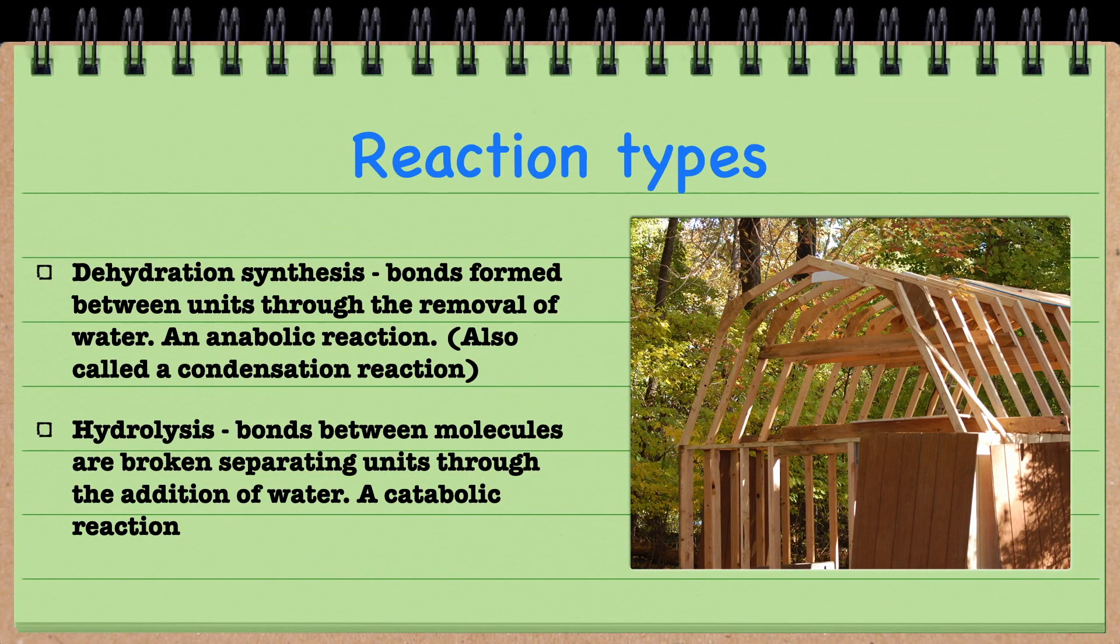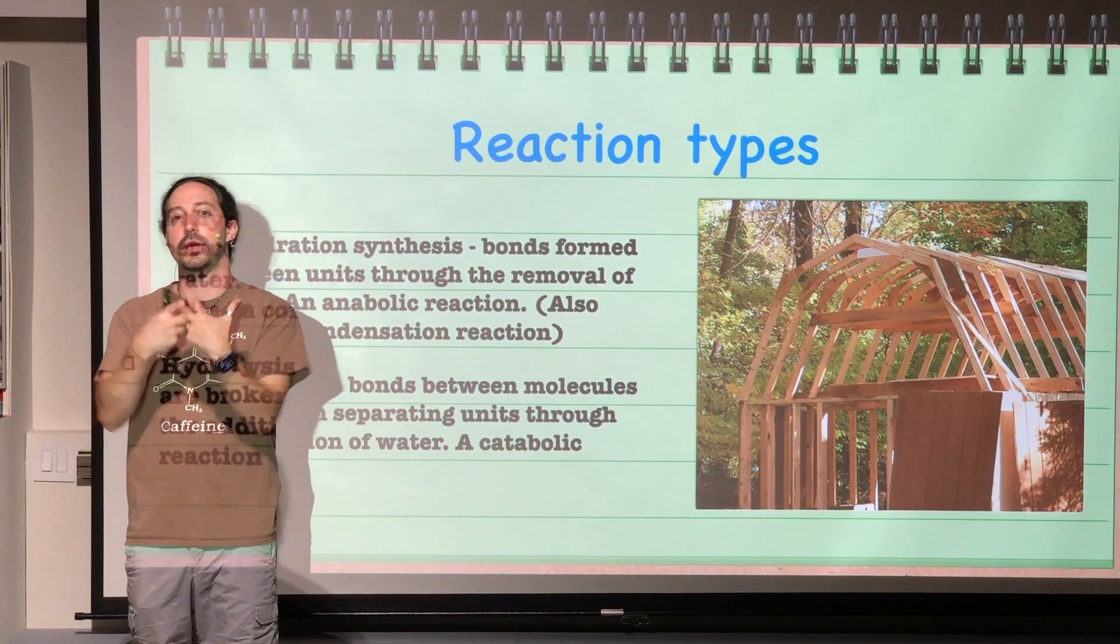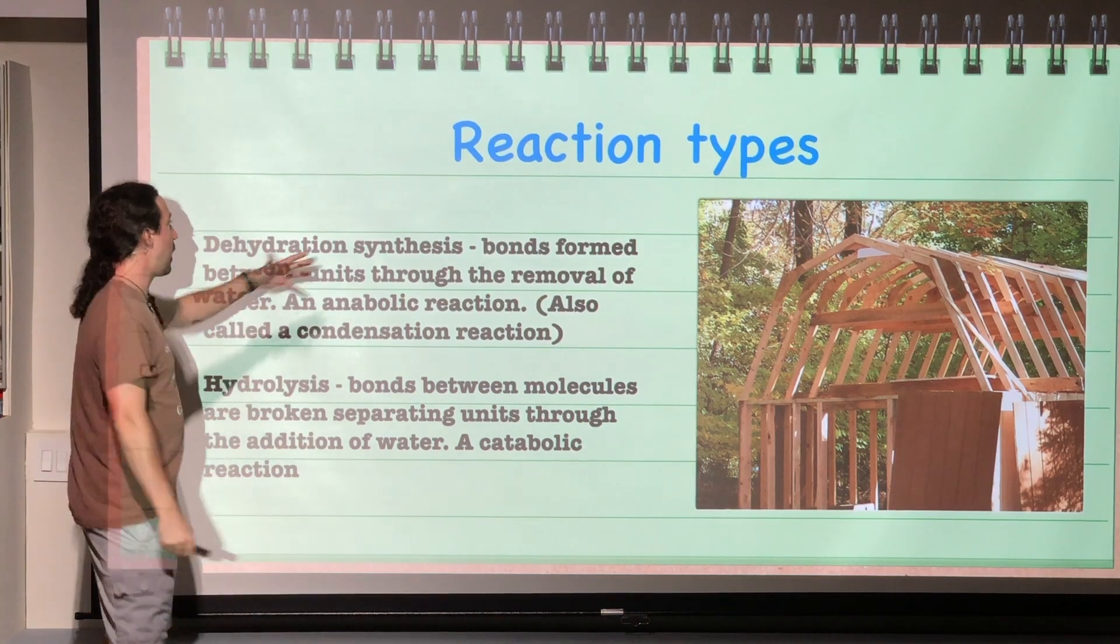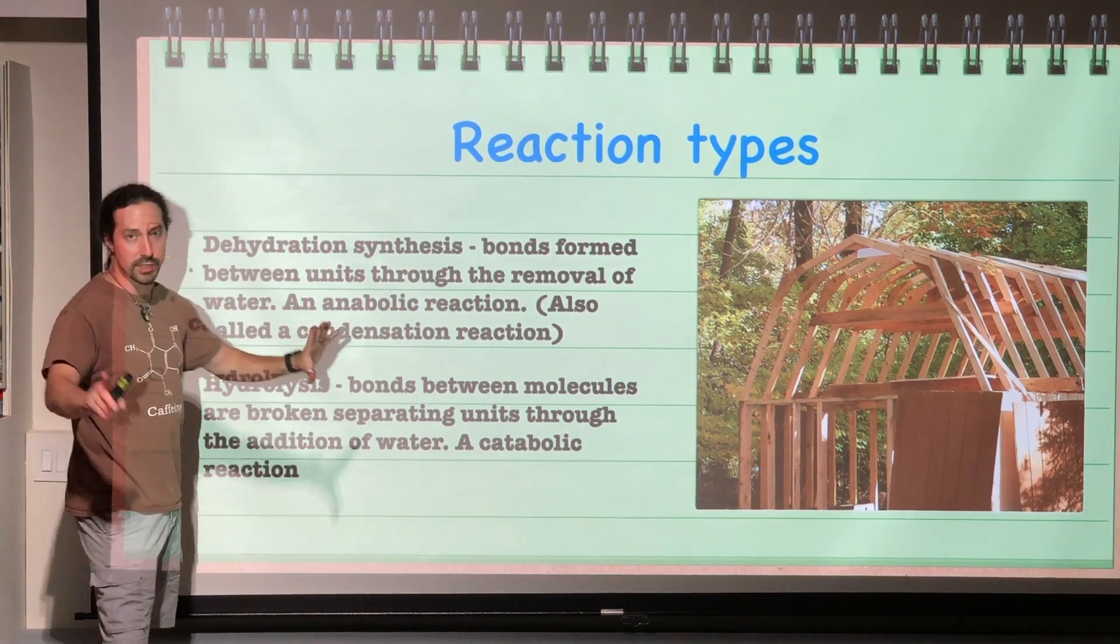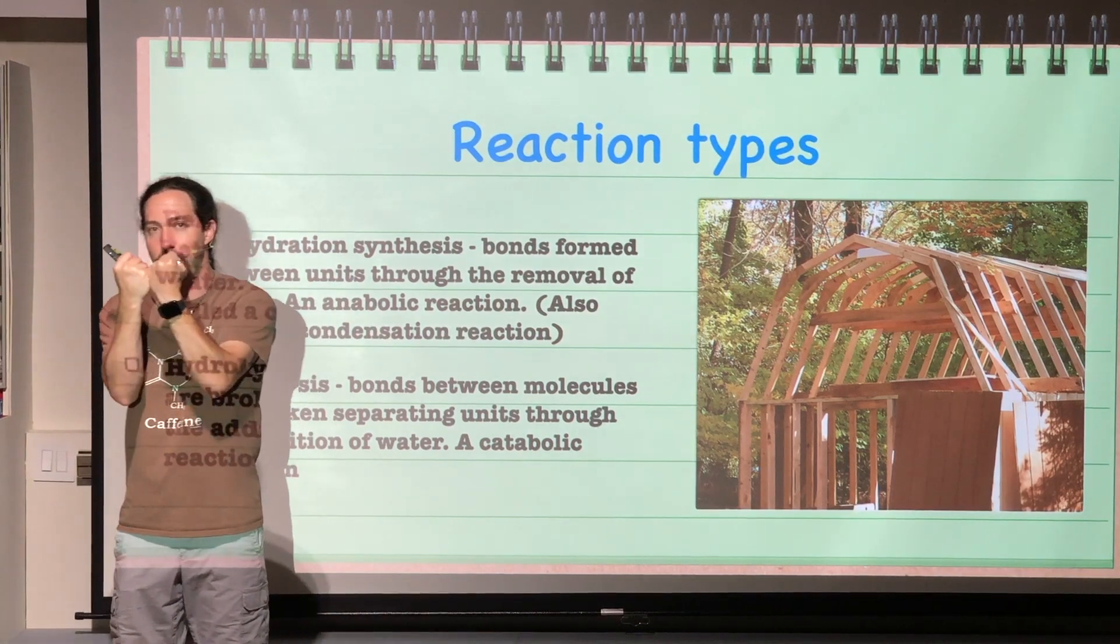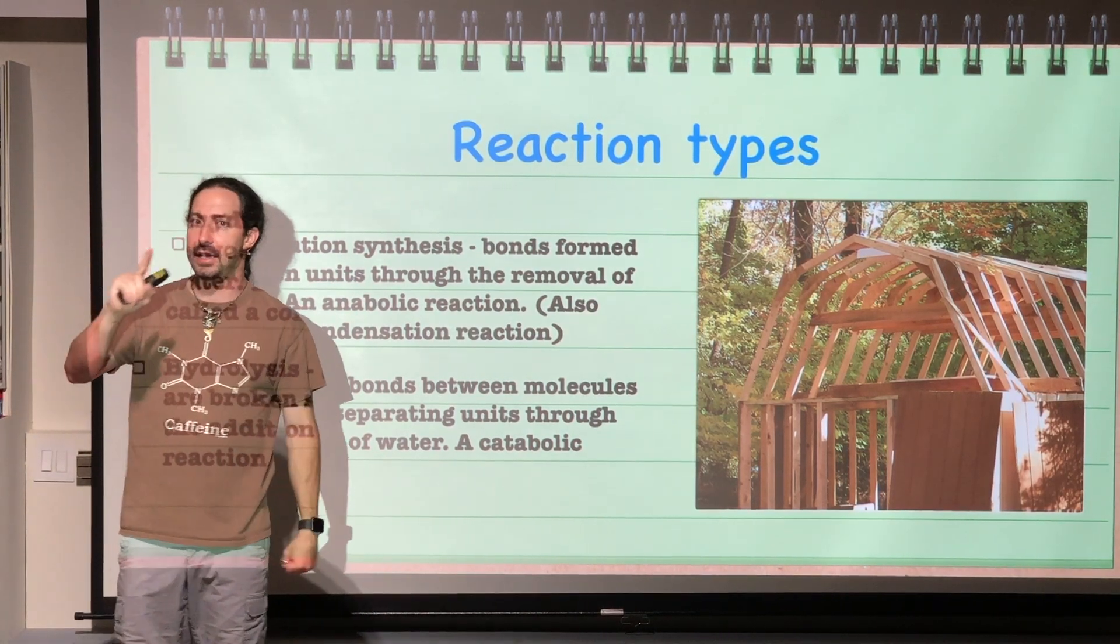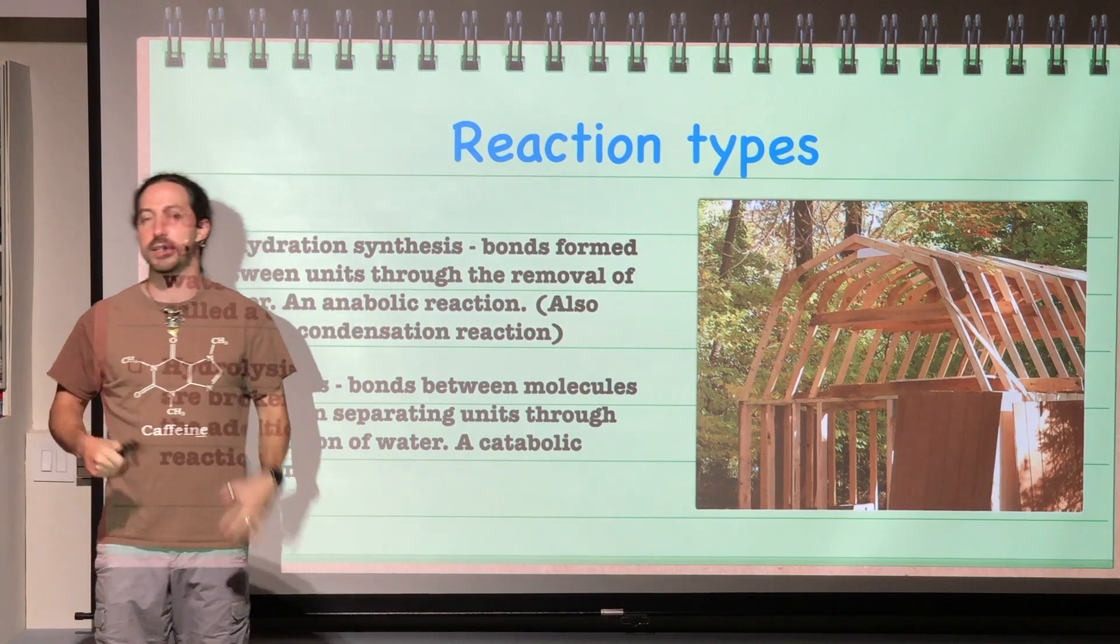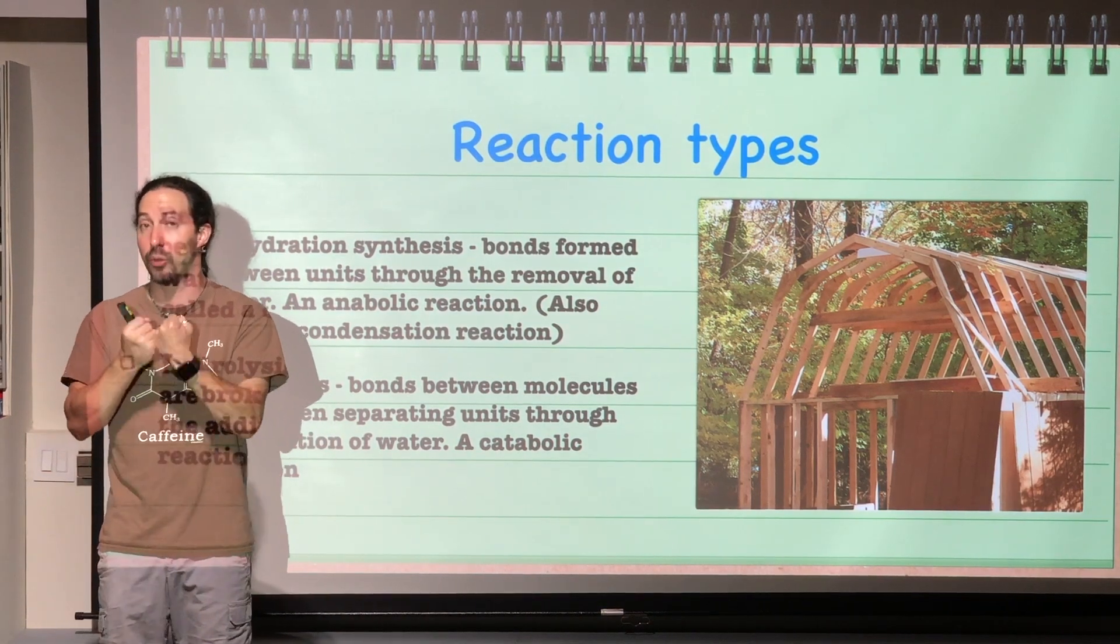All right. So reaction types, we have two. The first one is called dehydration synthesis. Dehydration synthesis is where we are going to take our different molecules and put them together. So bonds are going to be formed between units, between our different molecules. A bond is going to form between them and this is going to be a covalent bond. This is going to be a real chemical bond.